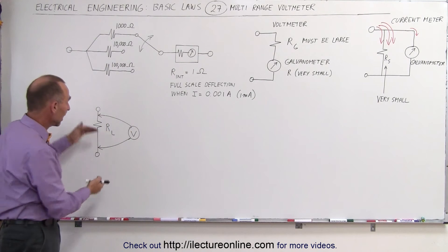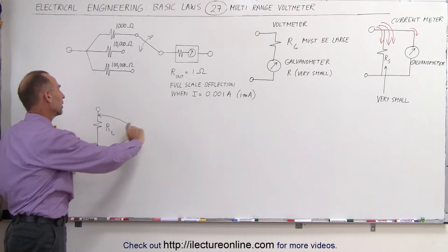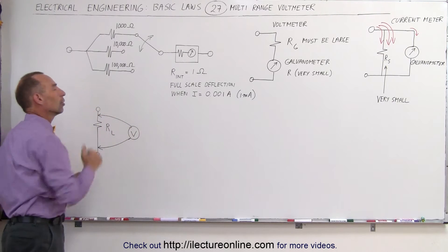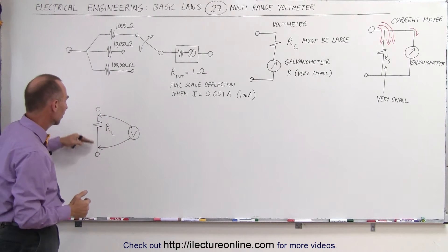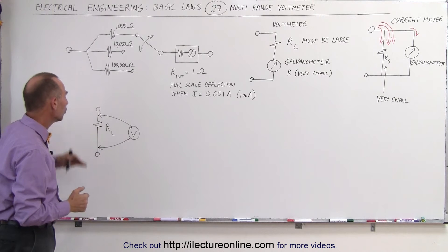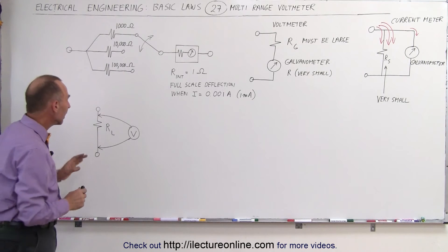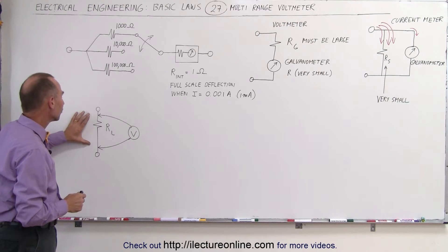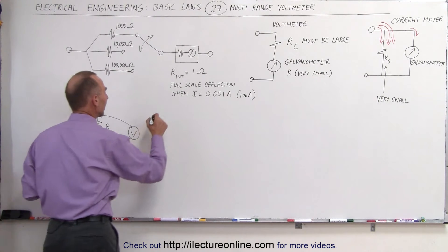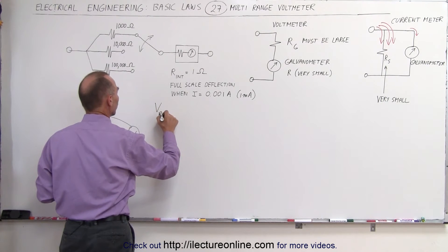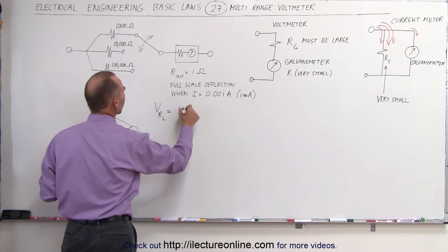This is, of course, what it would look like, we have some load resistor on the circuit, we attach the voltmeter across the load resistor to measure the voltage difference between the two ends of the load resistor. Let's assume that we have a 1 volt difference across the load resistor. Let's say that the voltage across the load resistor R sub L is equal to 1 volt.